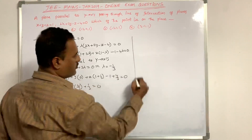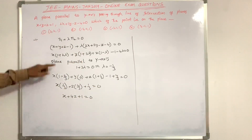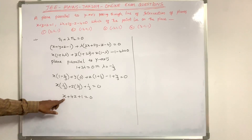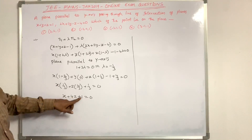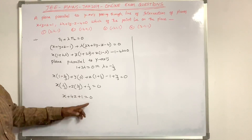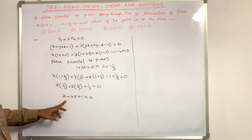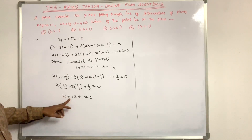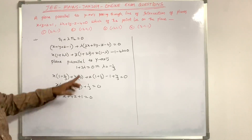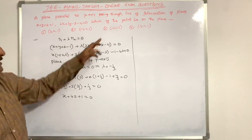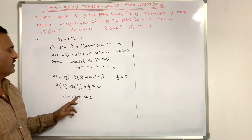Now we verify the answer options. First option (3, 2, 1): 3 + 8 + 1 ≠ 0, not satisfied. Second option: -3 + 0 + 1 ≠ 0, not satisfied. Third option: -3 + 4 + 1 = 2 ≠ 0, also not satisfied.